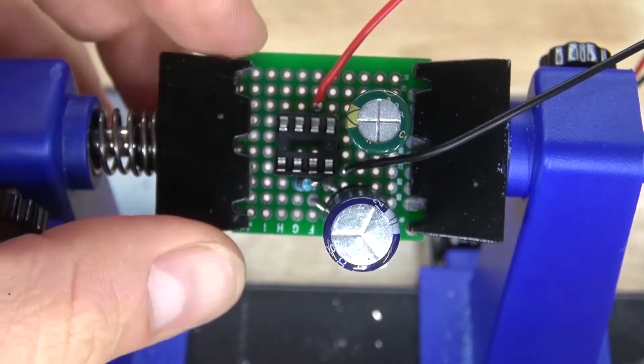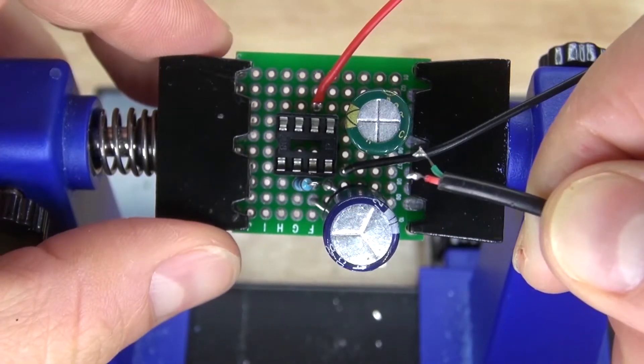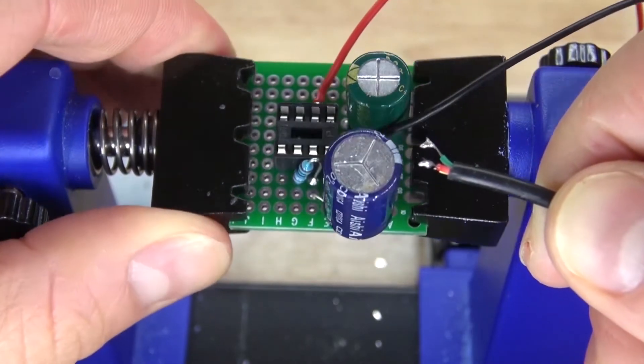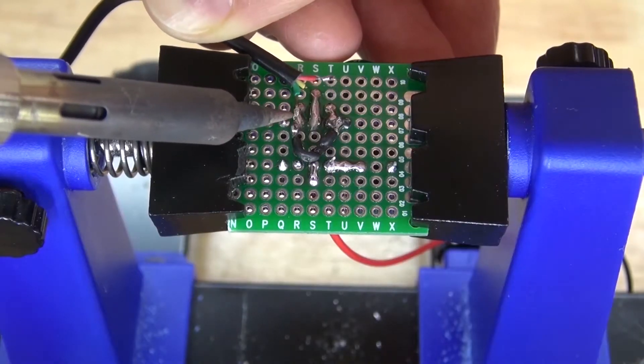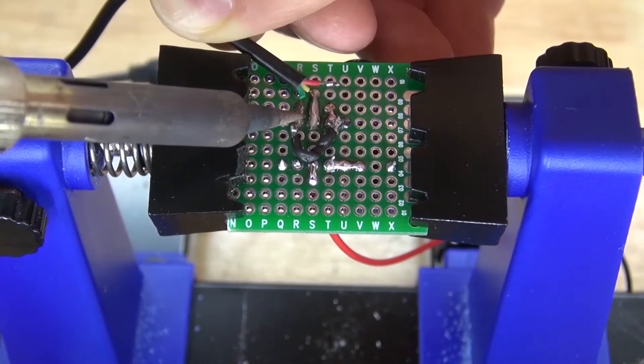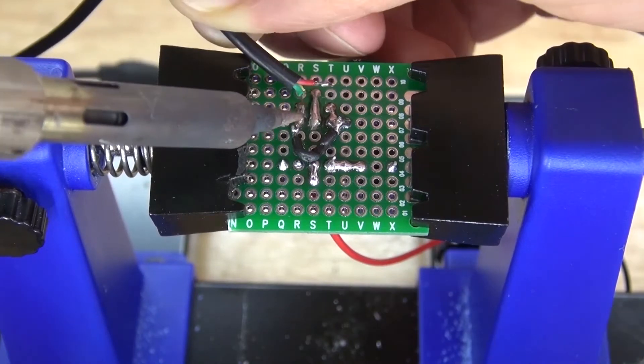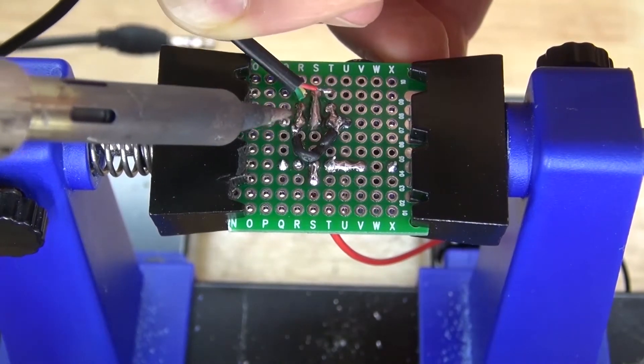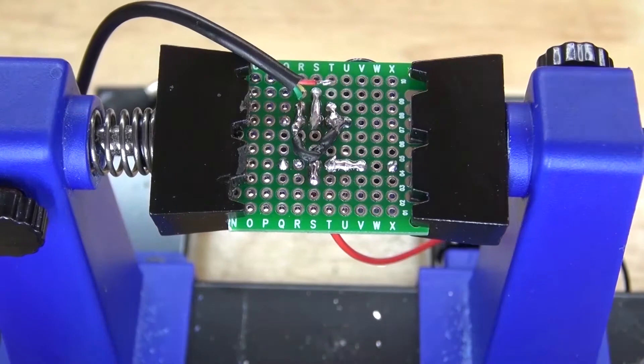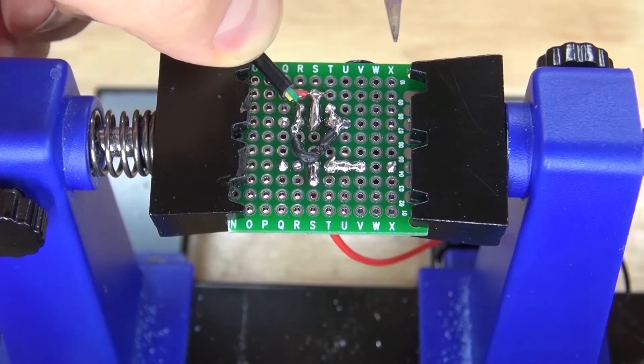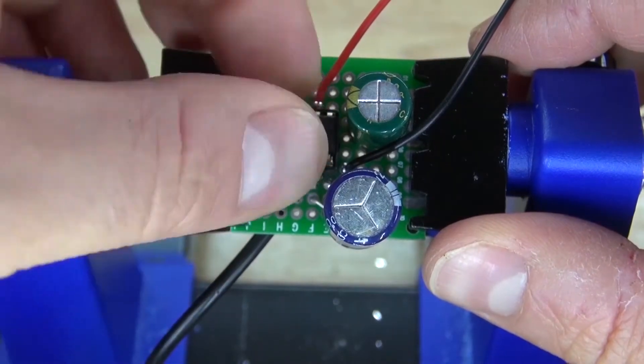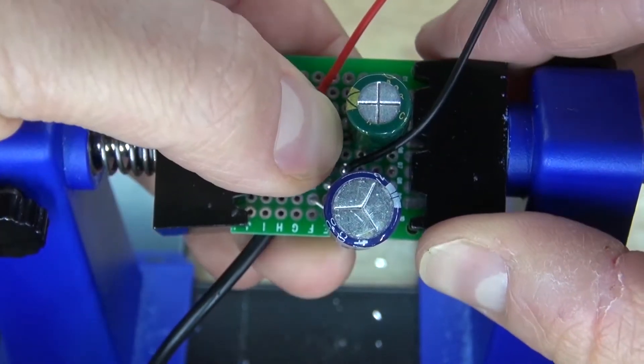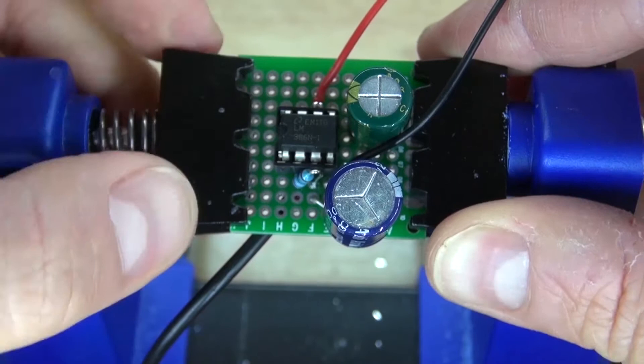Now take your audio jack and the green is negative and the red is positive. Solder the green negative to pin 2 and then solder the red positive to pin 3. Next take your LM386 microcontroller and place it into its socket and there you have it.